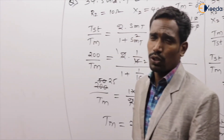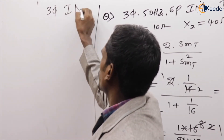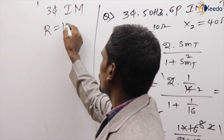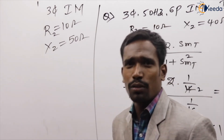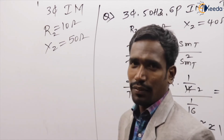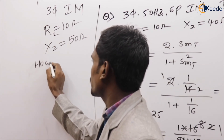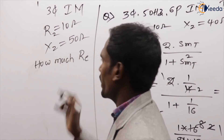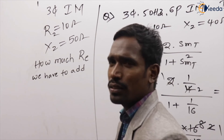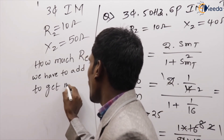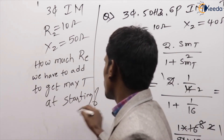Another type of question: a three-phase induction machine, rotor resistance 10 ohms, rotor reactance 50 ohms. How much extra resistance do we have to add to get maximum torque at starting?